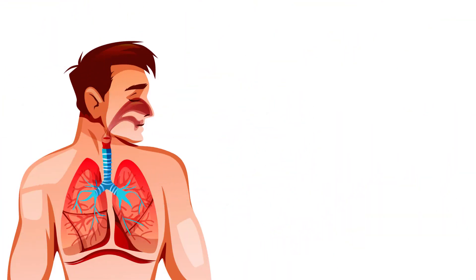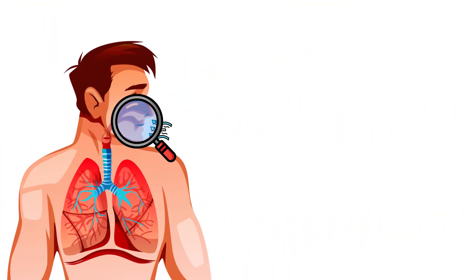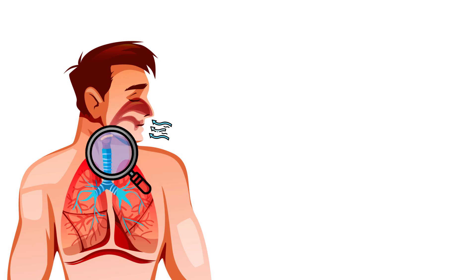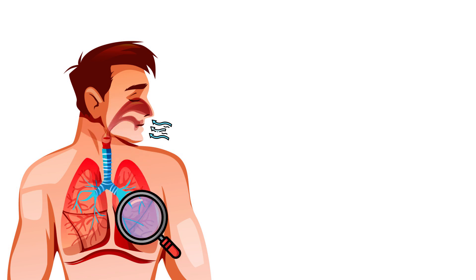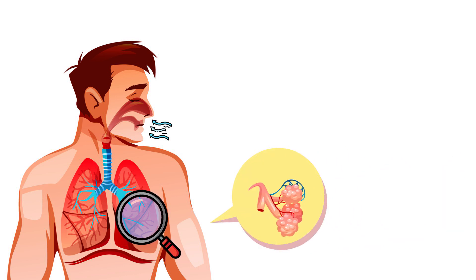Air enters through the nose or mouth, travels down the trachea, and reaches the bronchi, which branch into smaller bronchioles within the lungs. These bronchioles terminate in clusters of tiny air sacs called alveoli.